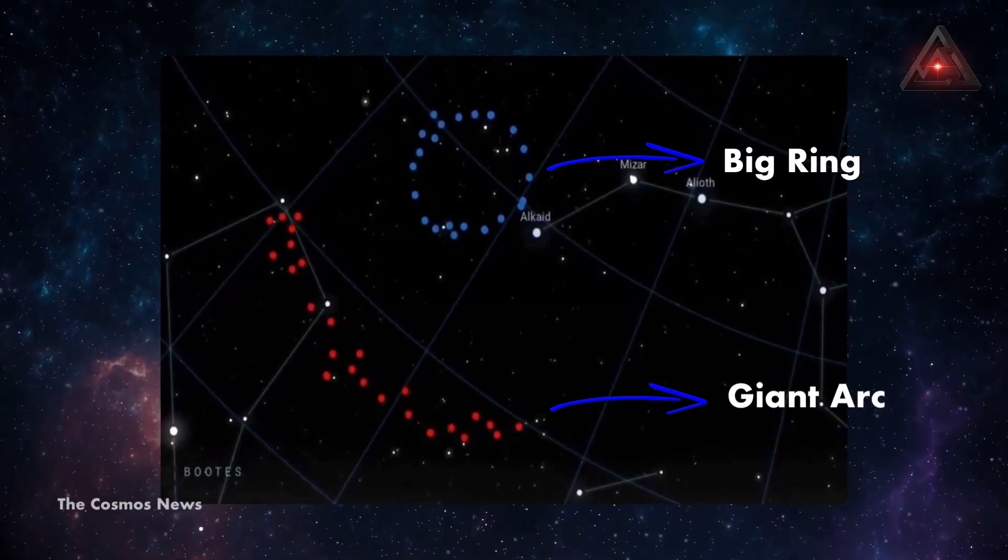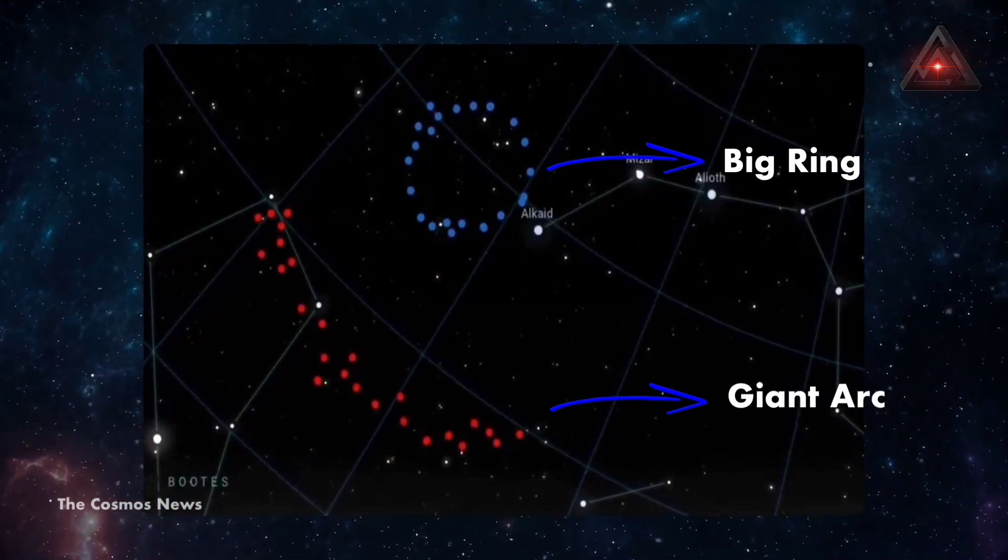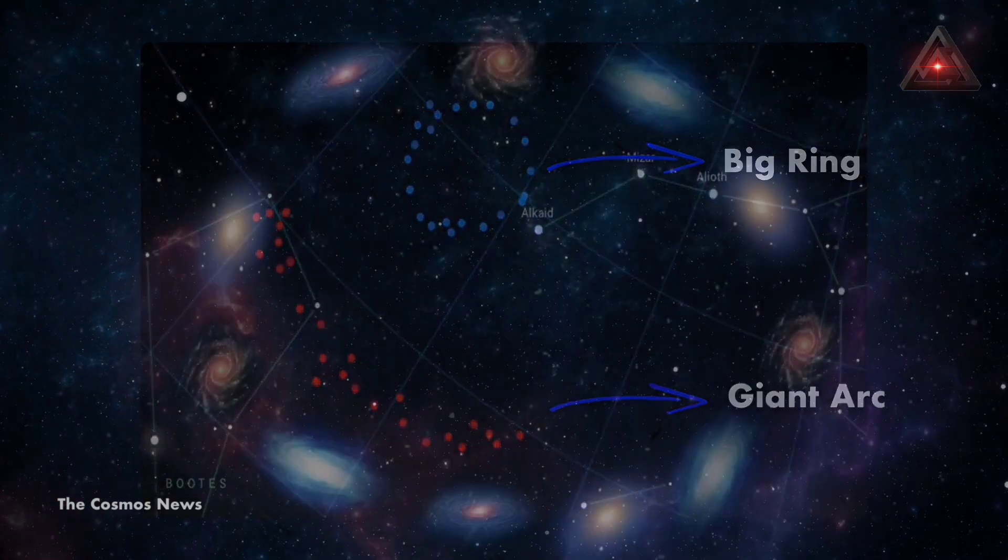Both of these structures are much larger. The Giant Arc is almost three times bigger, and the Big Ring's circumference is comparable to the Giant Arc's length.